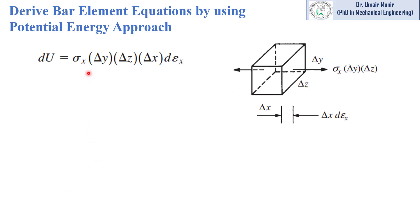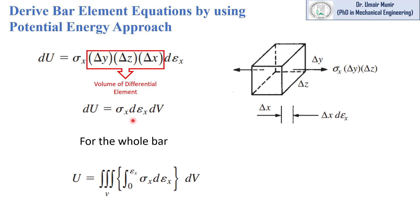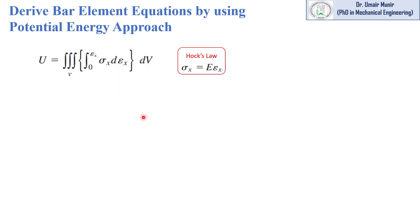We have this expression for strain energy. If we multiply the three sides of the differential element — delta x, delta y, and delta z — we get the volume of the differential element. We can write the strain energy equation in this form. To calculate the strain energy for the whole bar, we integrate the above equation with respect to volume and with respect to epsilon x.